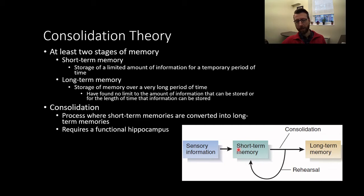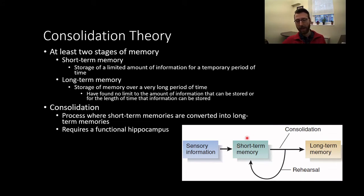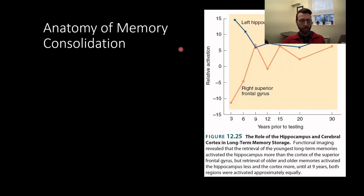Information can be converted from short-term memory — things that are transient and part of your current conscious awareness — into long-term storage through this consolidation process. Our long-term memory doesn't end with the hippocampus; there are other regions involved.